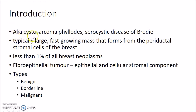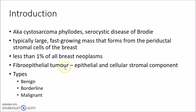Phyllodes Tumor is also known as Cystosarcoma Phyllodes or serocystic disease of Brody. It is typically a large fast-growing mass that forms from the periductal stromal cells of the breast. It accounts for less than 1% of all breast neoplasms, so it is relatively a rare condition. It is a fibroepithelial tumor, meaning there are both epithelial and cellular stromal components — fibro denotes the stromal components and epithelial denotes the epithelial components.